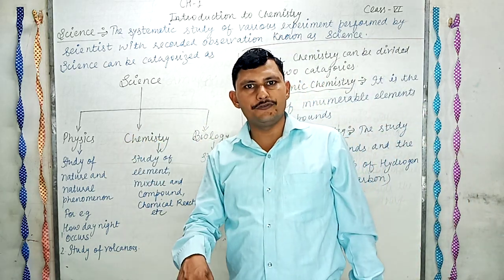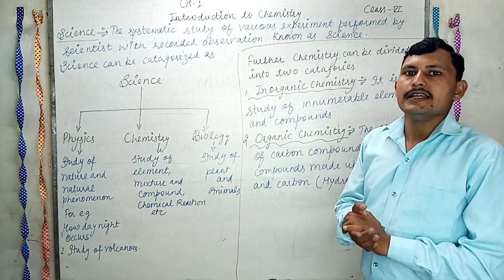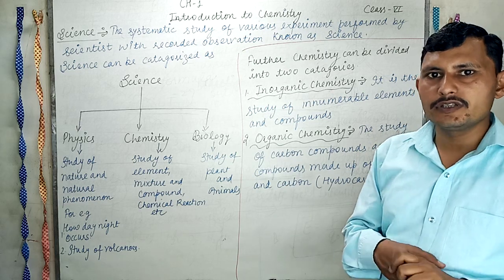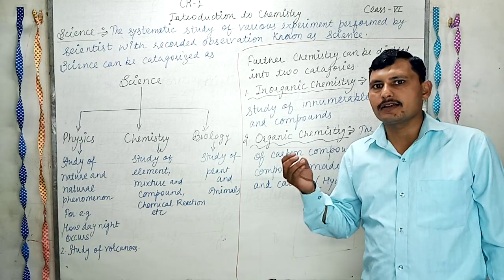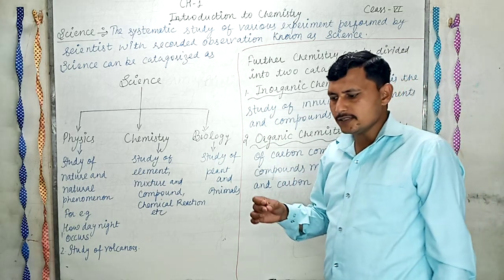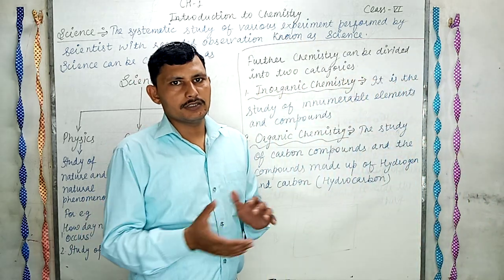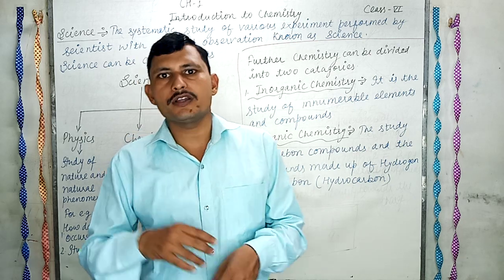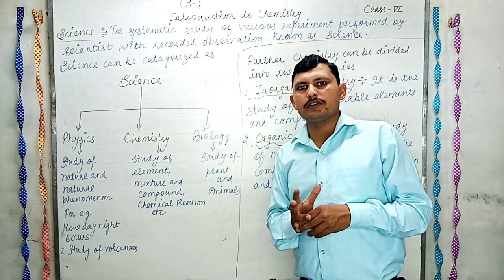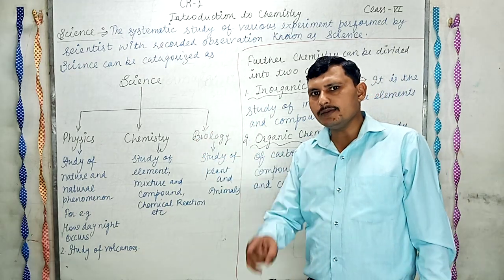The second branch is Chemistry. Chemistry is the branch of science which deals with the study of elements, compounds, and mixtures, and the chemical reactions — like in what time chemical reactions take place and what is the rate of reactions. All these we study under Chemistry.